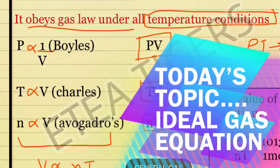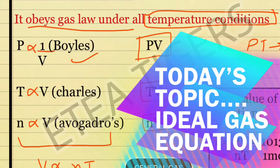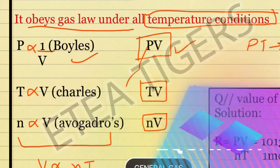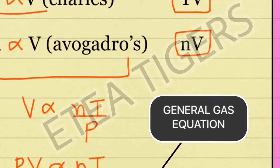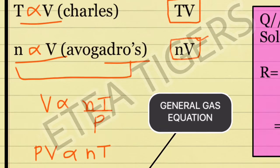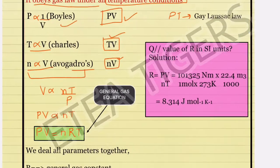We have to use P proportional to 1 by V, which is Boyle's law. In this case, we have learned that n is directly proportional to V, which is Avogadro's law.